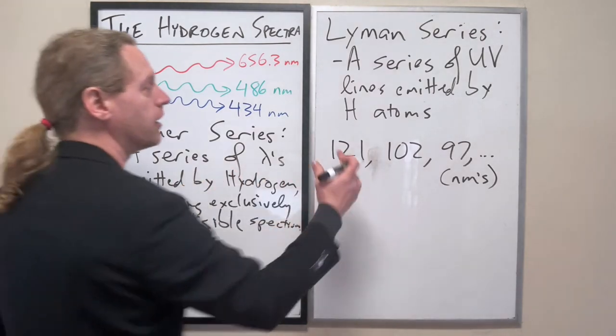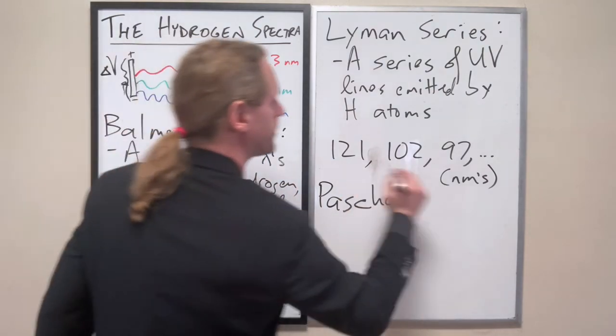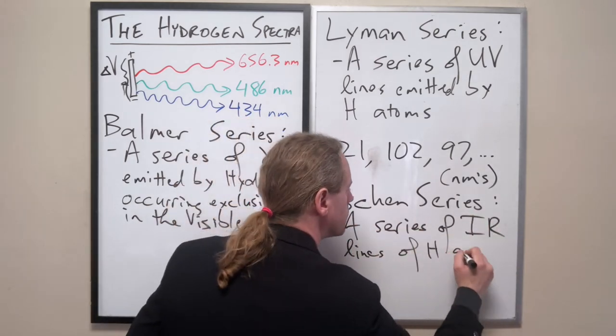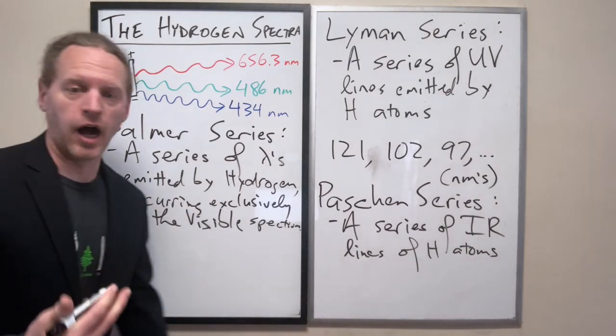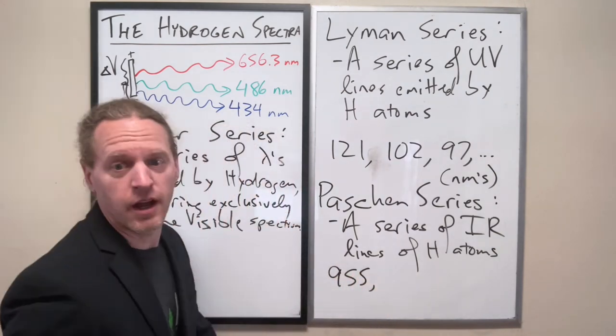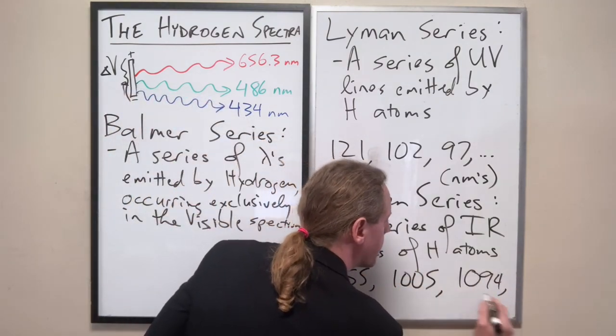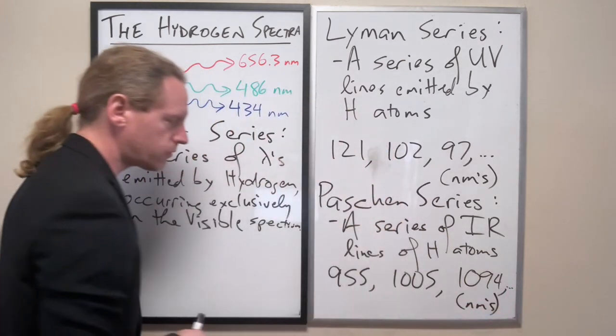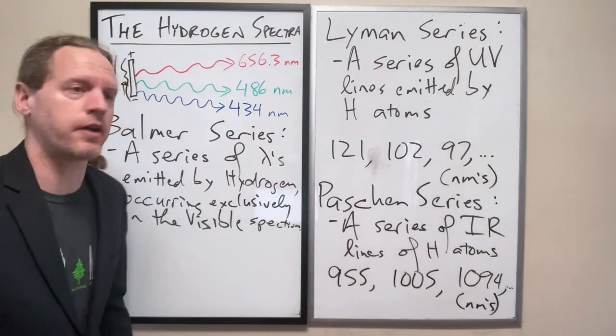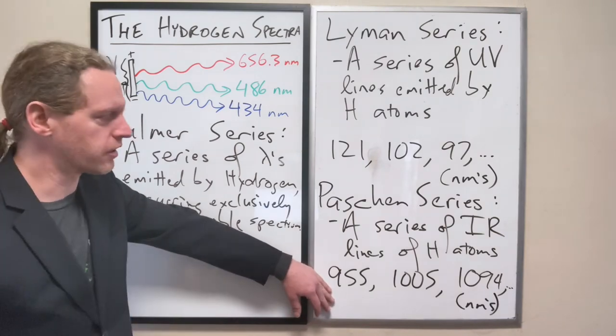Then we did the same thing on the infrared part, and that's where Paschen comes in. P-A-S-C-H-E-N. It's a good German name. In this case here, these begin at about 955 nanometers, 1005, 1094 nanometers. Since the visible spectrum ends at about 750 or so nanometers, the shortest of these even exclusively occurs in the infrared, and they get longer from that.